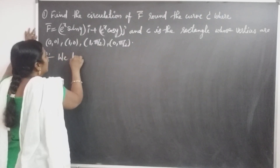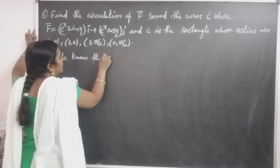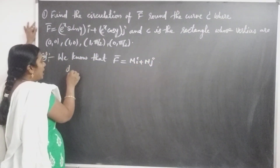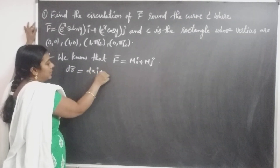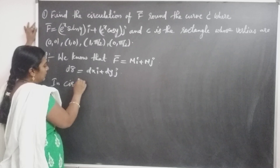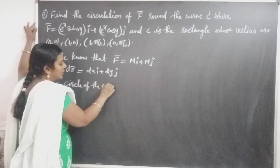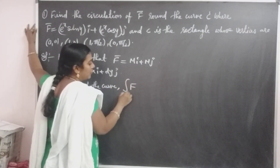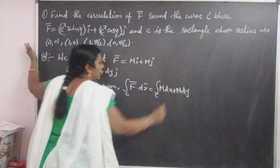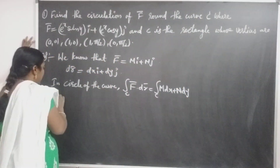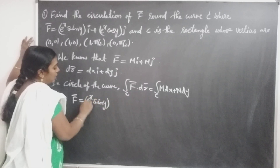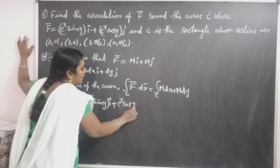We know that f̄ equals Mi plus Nj in circular motion. The dr̄ is the position vector, that is dx i plus dy j. In the circle of the curve, the line integral over C of f̄ dot dr̄ equals the integral over C of M dx plus N dy. Here, given the function f̄ equals e to the power x sin y into i, plus e to the power x cos y into j.